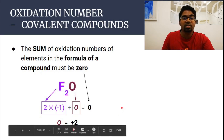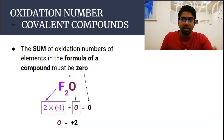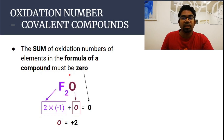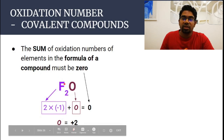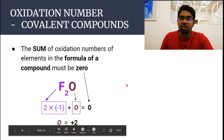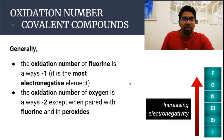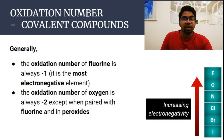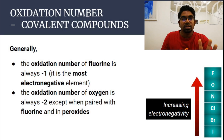Oxygen takes the oxidation state of plus two in difluorine oxide. This is a rare case — whenever oxygen is paired with fluorine, fluorine is the more electronegative element, so it gains the electrons and the negative charge is assigned to fluorine instead. The oxidation number of fluorine is always minus one because it is the most electronegative element; no other element will assume the negative charge when combined with fluorine.